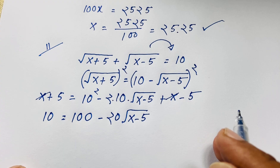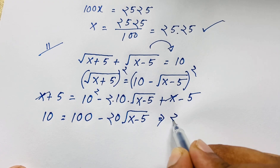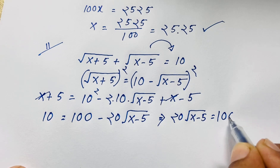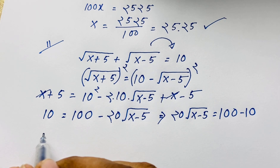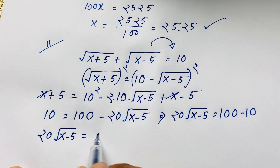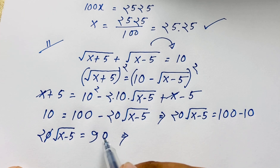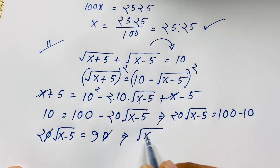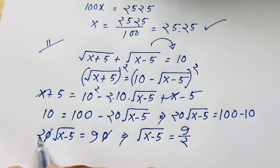Now you can see easily: if I move this to the other side it will be positive, so 20 times square root of (x minus 5) is equal to 100. Then moving the negative 10 to the other side gives 20 times square root of (x minus 5) equals 90, since 100 minus 10 is 90. Dividing both sides by 20, we get square root of (x minus 5) equals 9 over 2.